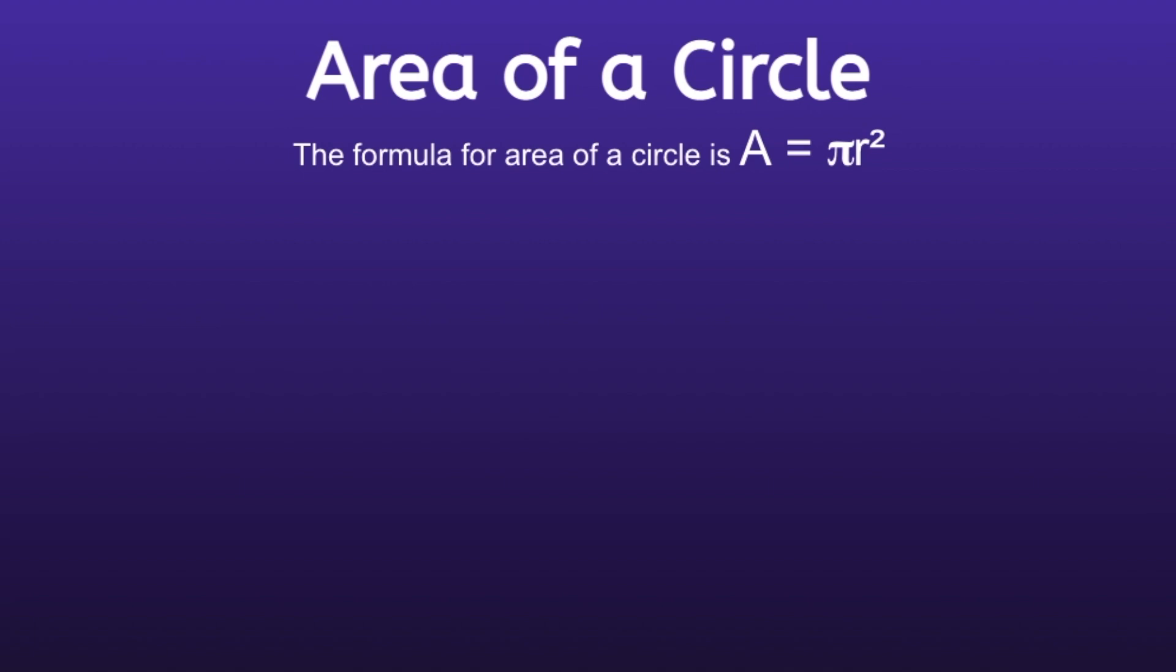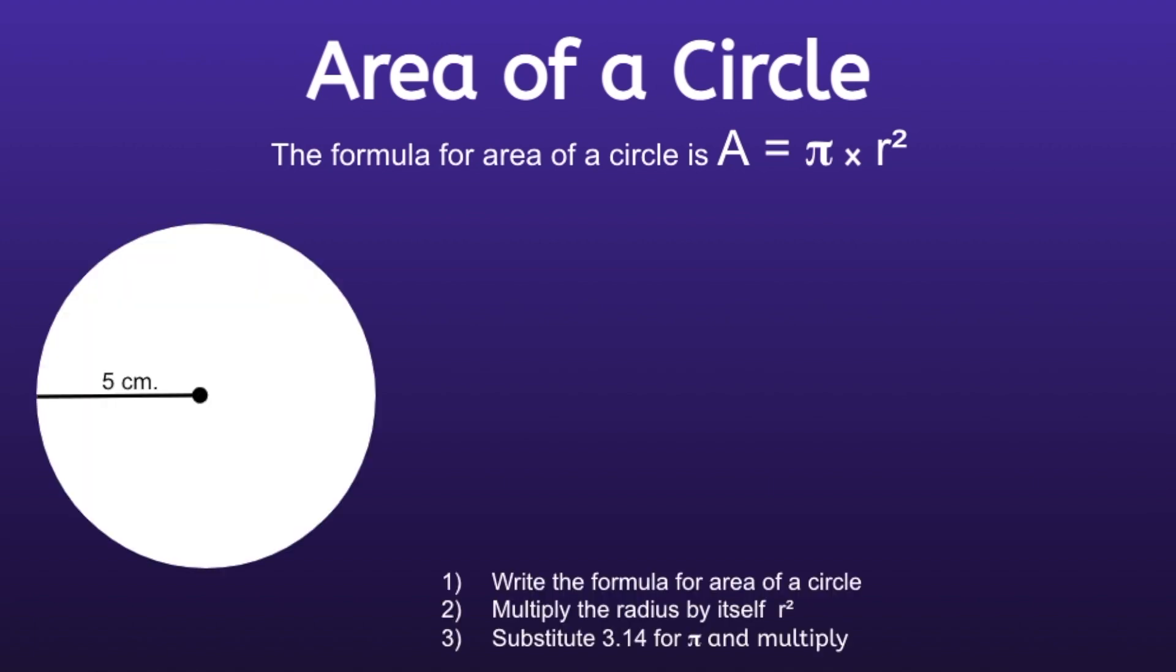The formula for area of a circle is A equals pi r squared, which means area equals pi times the radius squared. So in order to find the area of a circle, we are going to follow three steps. Step one is to write the formula for area of a circle. So the formula is A equals pi times radius squared.